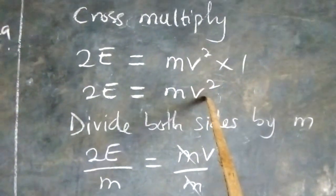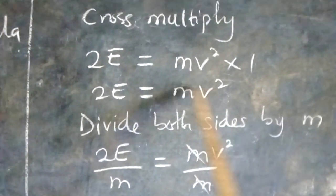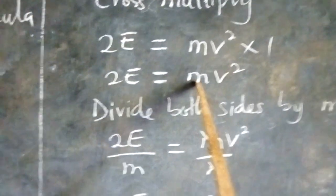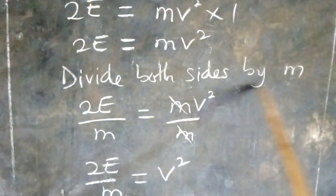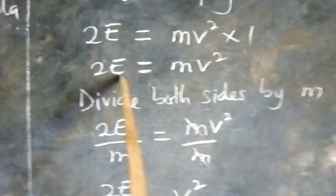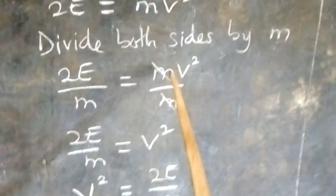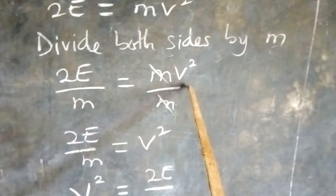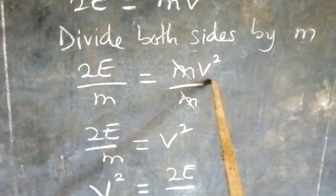Why? We need v. So, we divide both sides by what is beside v, and that is m. That is why we are dividing both sides by m. So, 2E, that is what we have on this side, divided by m. Then, we have mv squared divided by m. m cancels with m. We are left with v squared on this side.